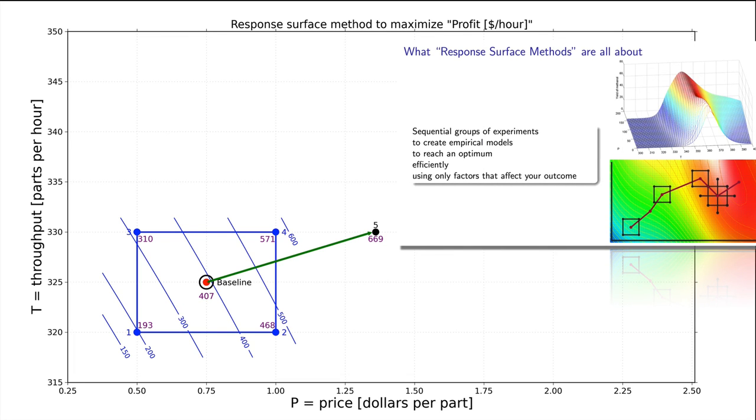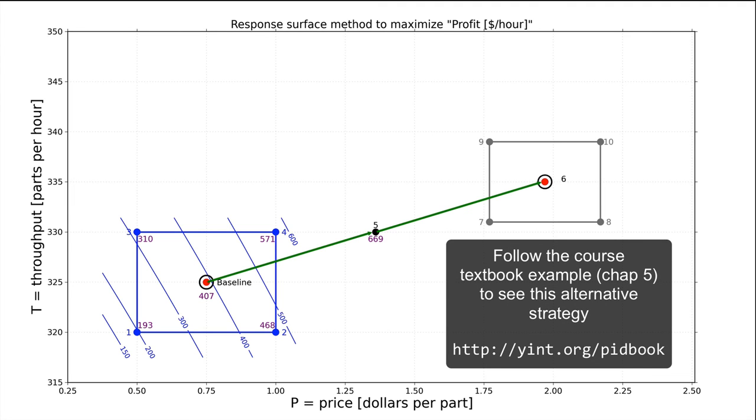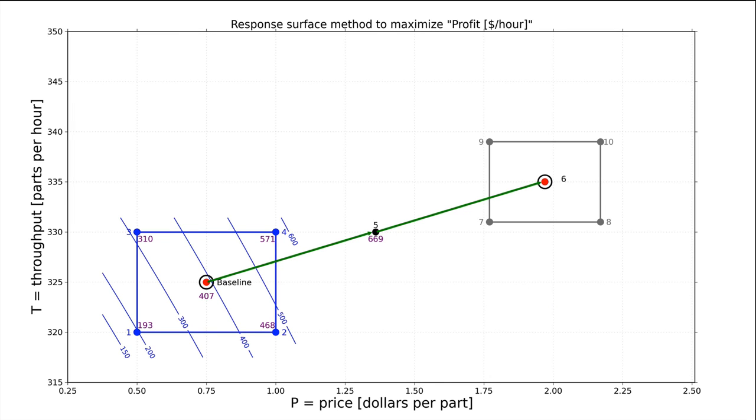So somewhere over here, we have to start a new factorial to refit the local surface. As with the first factorial, we can choose the range in real-world units that define the minus 1 and plus 1 positions. Once we pick the range, we have the center point defined as well. Now there are several locations I could pick for this new factorial. In the course textbook, I show you one option, which is actually slightly further along the direction of steepest descent. That's a valid approach, and especially so if experiments are cheap. If we assume experiments are expensive, we might want to reuse as many of our prior factorial points as possible. And that's what I'm going to show.